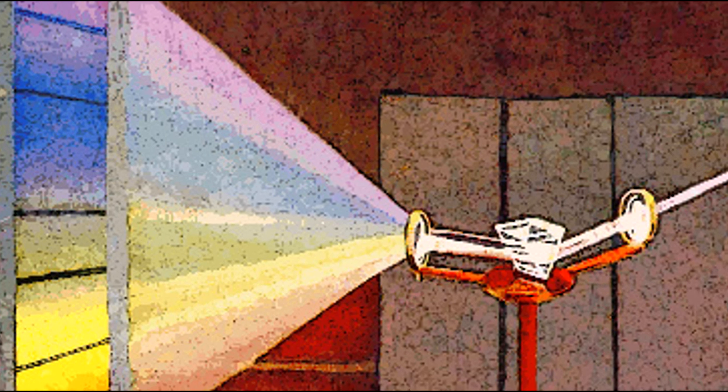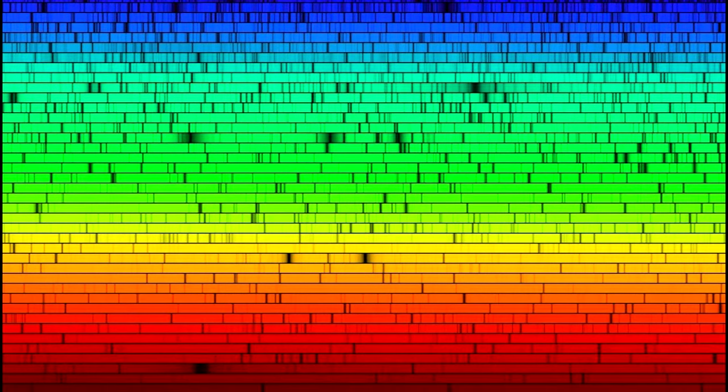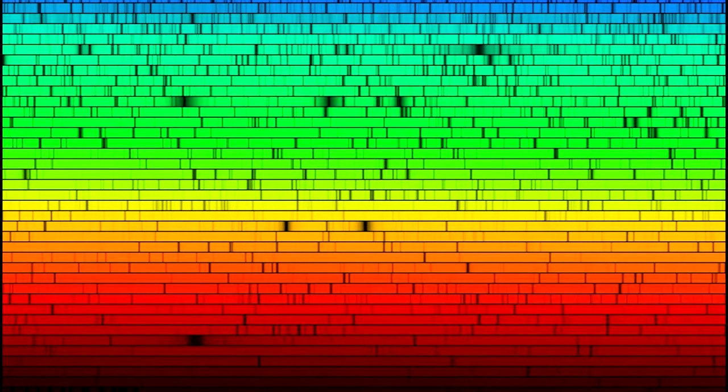In so doing, he discovered that when he spread sunlight into a spectrum, the spectrum was crossed by a great number of fine, dark lines. He had no idea what these dark lines were, but today we know that they were the key to learning what stars are made of.